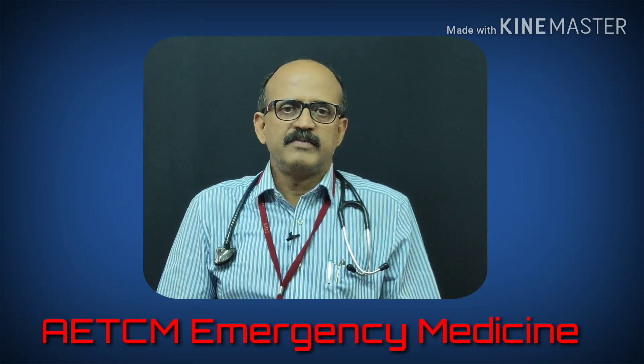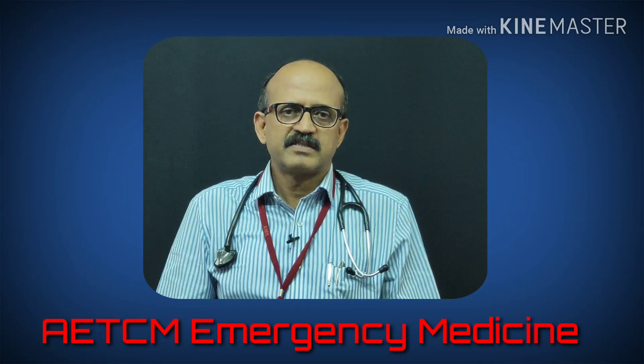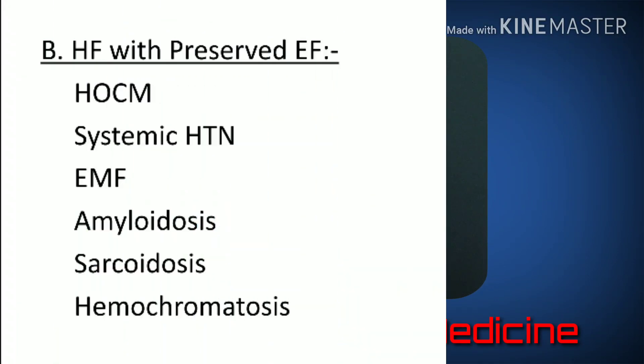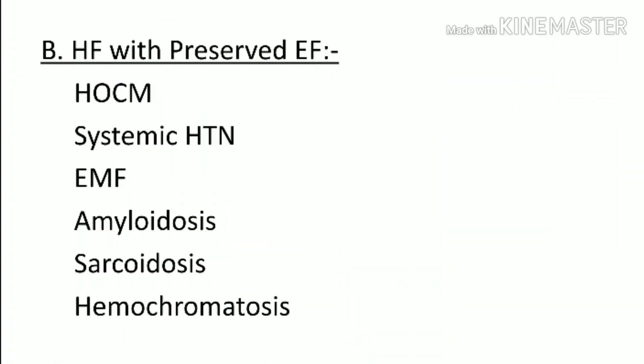The second group is heart failure with preserved ejection fraction. Here, hypertrophic obstructive cardiomyopathy, systemic hypertension, and endomyocardial fibrosis cause stiffness of the ventricle, reducing relaxation. As a result, the left heart must exert more pressure, leading to heart failure.